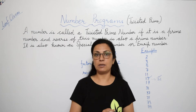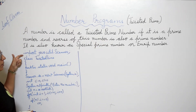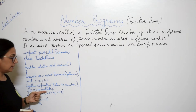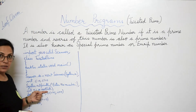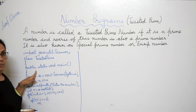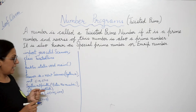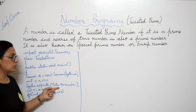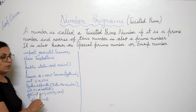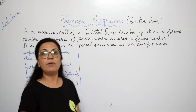Now we will start the programming statements. A few statements I have already written. First is the import statement to include the Scanner class, because we want to use the Scanner class function nextInt to input the number. Then we have the class, then the main function, then we create the object of the Scanner class — Scanner sc — and we prompt the user to enter the number, storing it in variable n: int n = sc.nextInt().